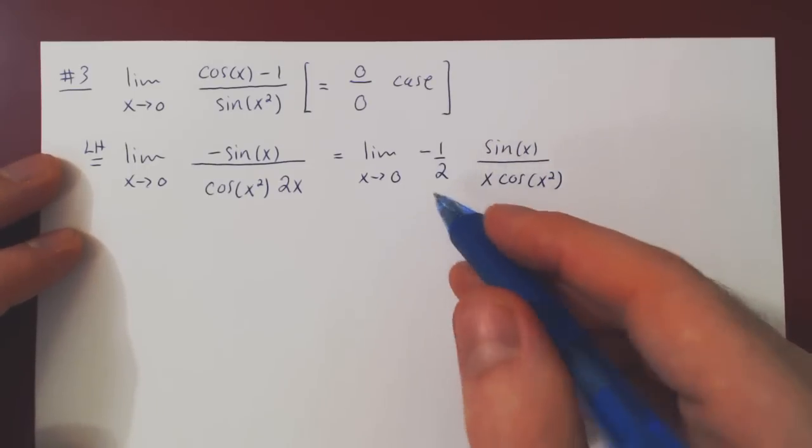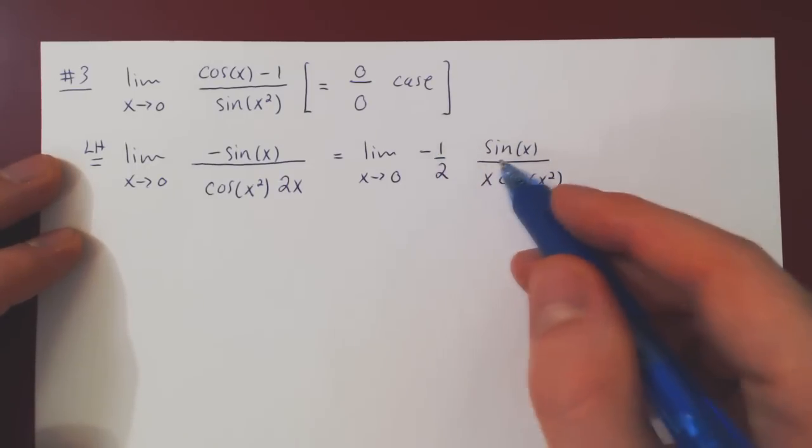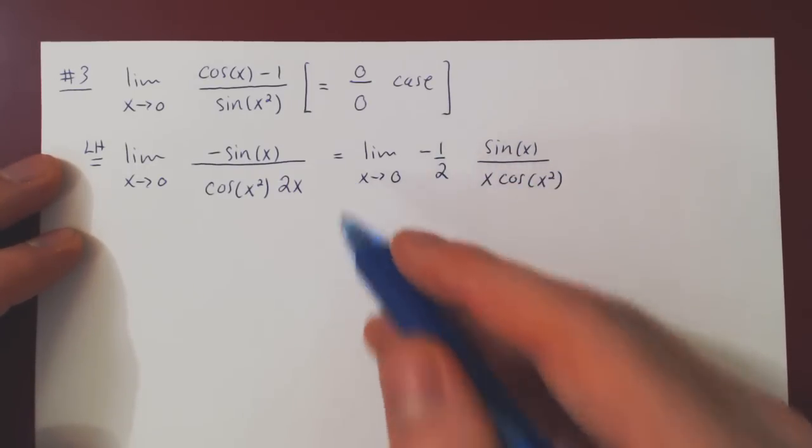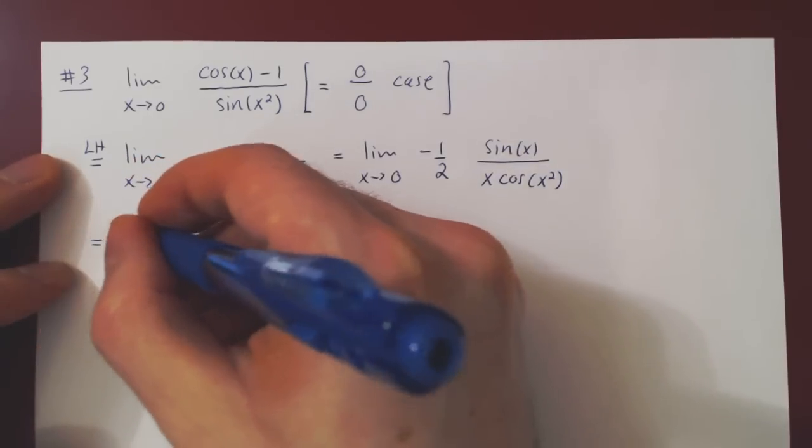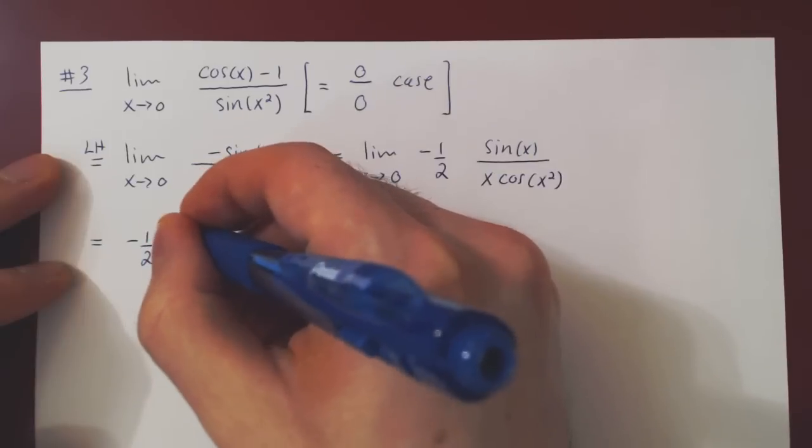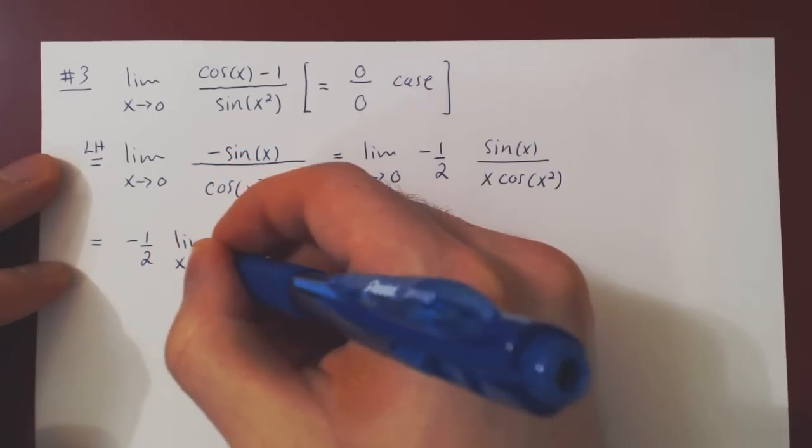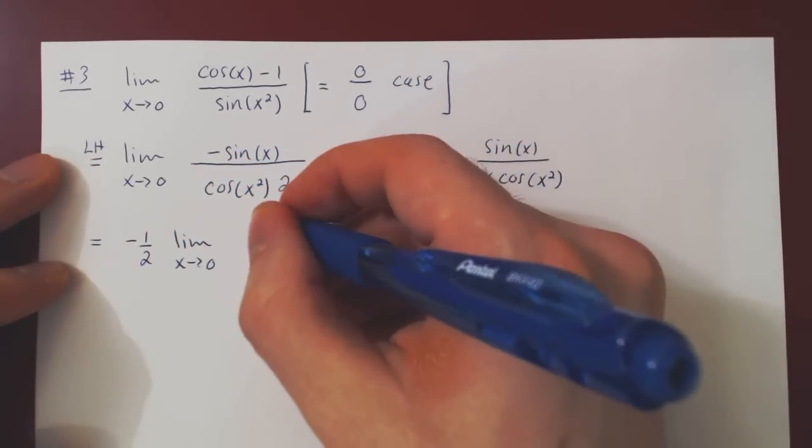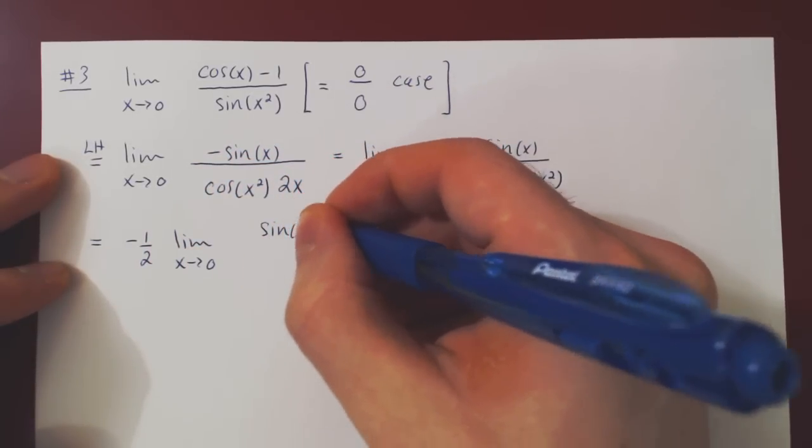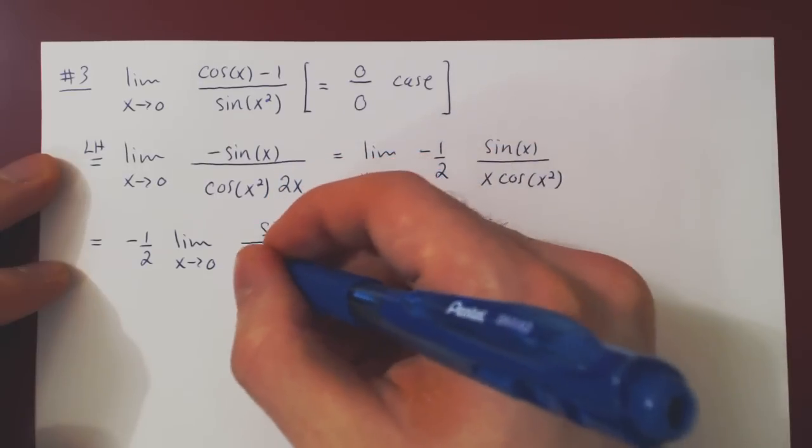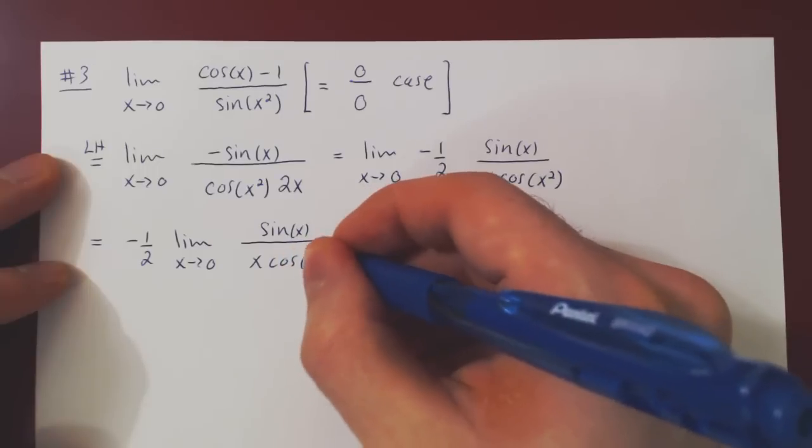We can go one step further, because negative 1 half is a constant multiple. We can pull this out of our limit and have negative 1 half, the limit as x approaches 0 of sin of x over x times cos of x squared.